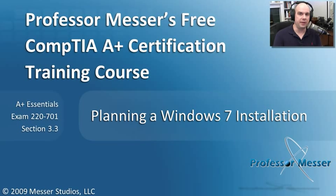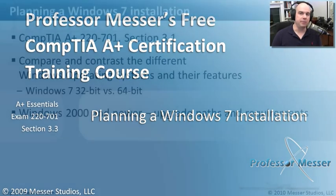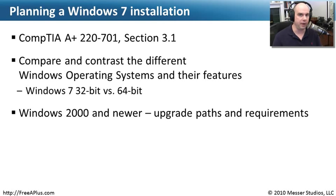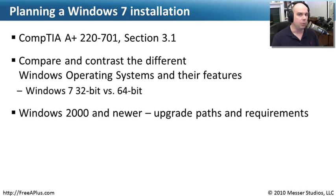Welcome to this module of Professor Messer's Free CompTIA A Plus Certification Training Course on Planning a Windows 7 Installation. I'm James Messer. In this module, we're going to go through the requirements of CompTIA A Plus 220-701 Exam, Section 3.1, where we need to compare and contrast the different Windows operating systems and their features, including Windows 7 32-bit versus 64-bit, upgrade paths and requirements. We'll go through all of that in this video and much more.